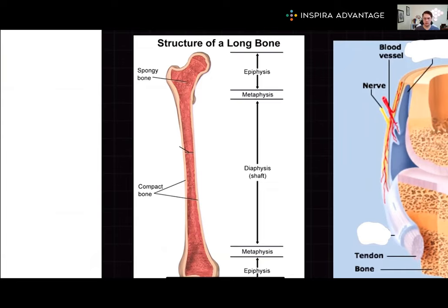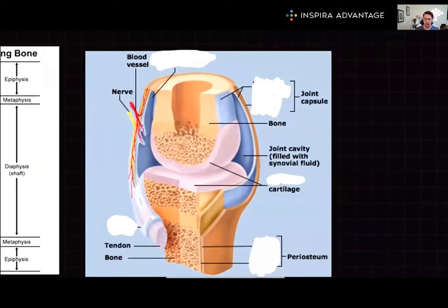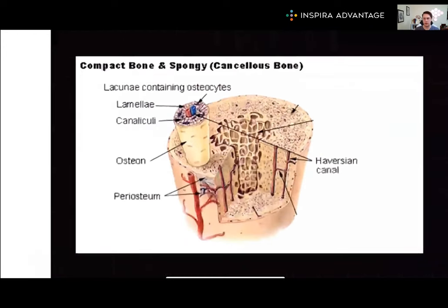Now let's dive into the structure of long bones. Long bones have shafts called diaphyses, which flare to form the metaphysis, and terminate in epiphyses. Epiphyses contain the epiphyseal growth plate — this is what actually allows the long bone to get longer; this is where the bone is growing. Next, I want to talk about the periosteum, which is a connective tissue surrounding the bone. Ligaments attach bones to other bones, and tendons connect bones to muscles.